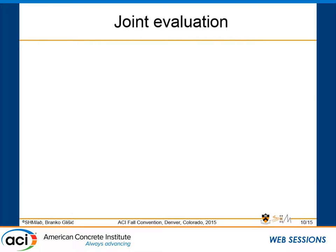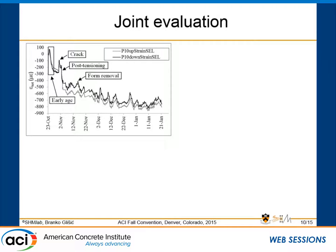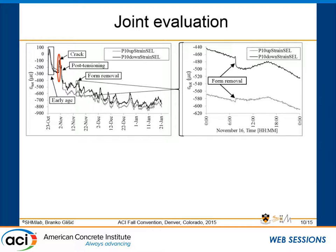We then wanted to see whether the continuity of the joint was preserved, since we have two sets of sensors on either side of the joint but don't directly cover it. When we analyzed the data after construction, the crack is visible again and then we have form removal. You can see the change in strain when the forms are removed — this can actually be used as a load test. You remove the forms, activate that load, and see what happens.